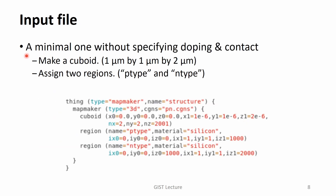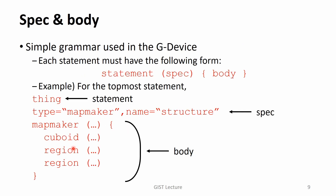A minimal input file without specifying doping or contact information is shown below. In this file, we make a cuboid whose size is 1 micrometer by 1 micrometer by 2 micrometers. After that, two regions — P-type and N-type — are assigned. You can find that the grammar is very simple in this input file, because I adopted the simplest grammar I could imagine.